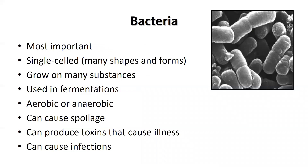Bacteria are the most important group of organisms in food. Bacteria constitute a large domain of microorganisms that are unicellular and lack a nucleus. Typically a few micrometers in length, bacteria have a number of shapes ranging from spheres to rods and spirals. Depending on the type, bacteria can be aerobic—needing oxygen—or anaerobic, where oxygen is toxic. Some types of bacteria cause spoilage, others are used beneficially in fermentation. There are also bacteria that cause infections, while others produce toxins as they grow in food, and both types can make people sick.